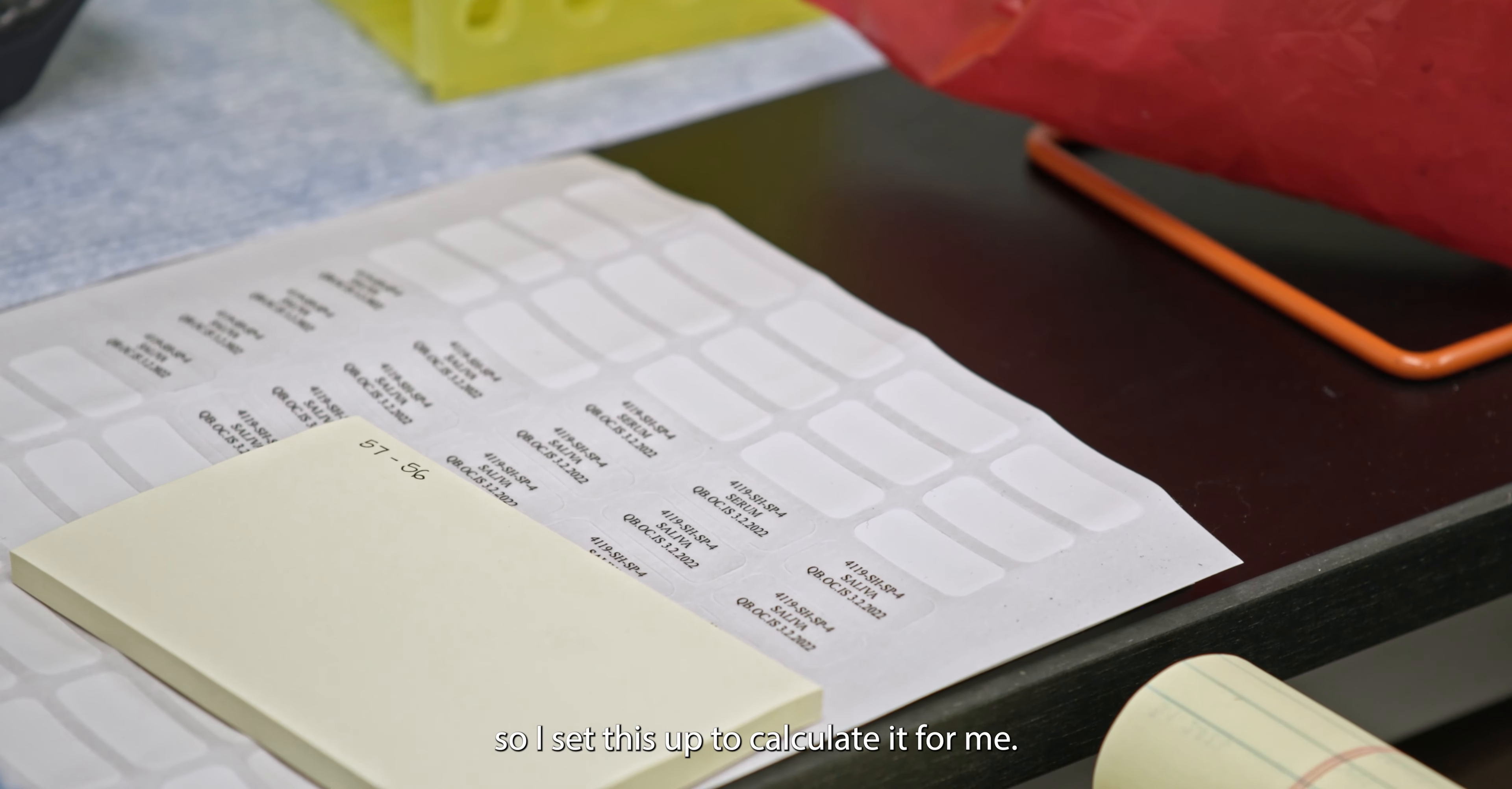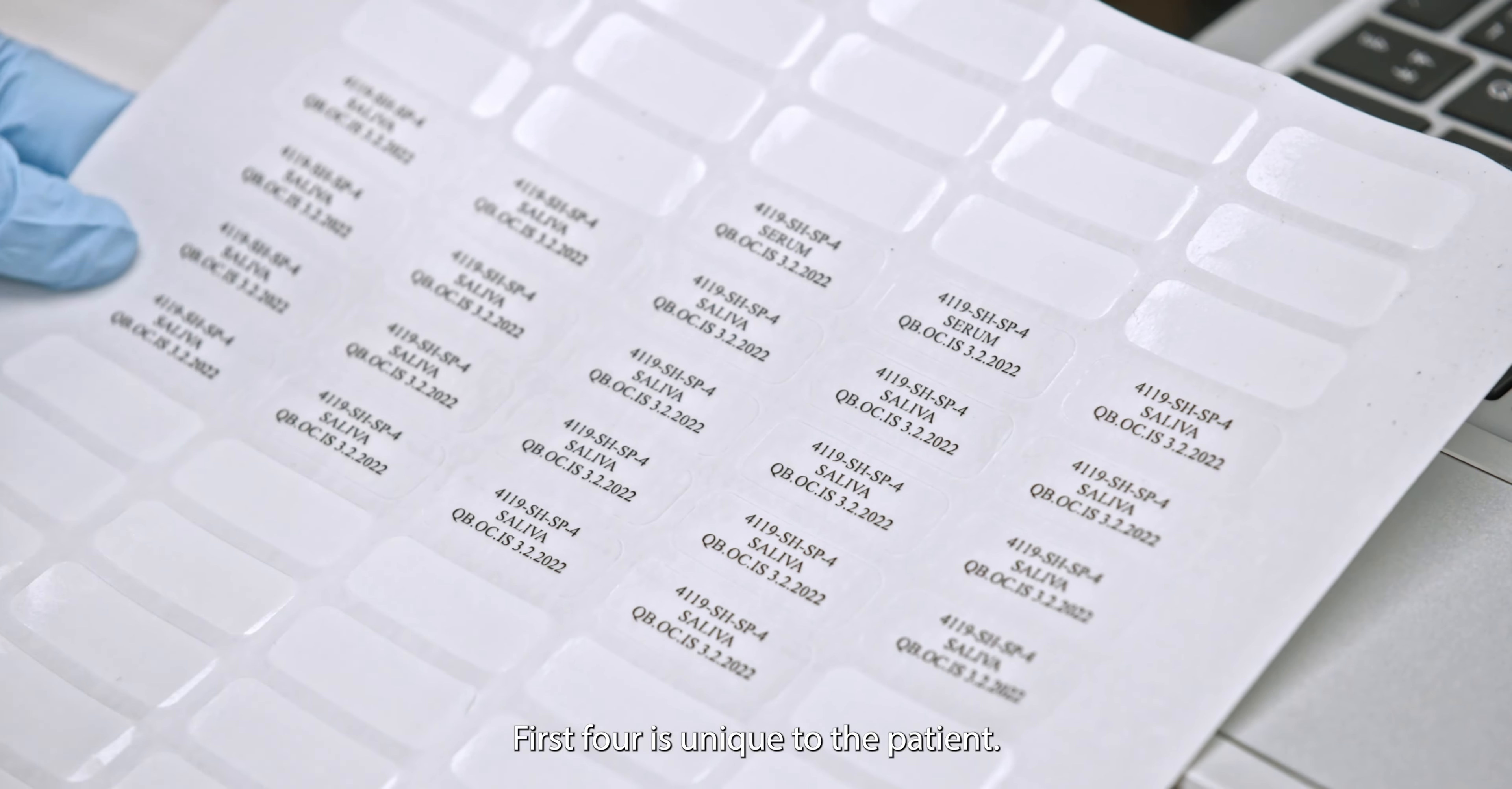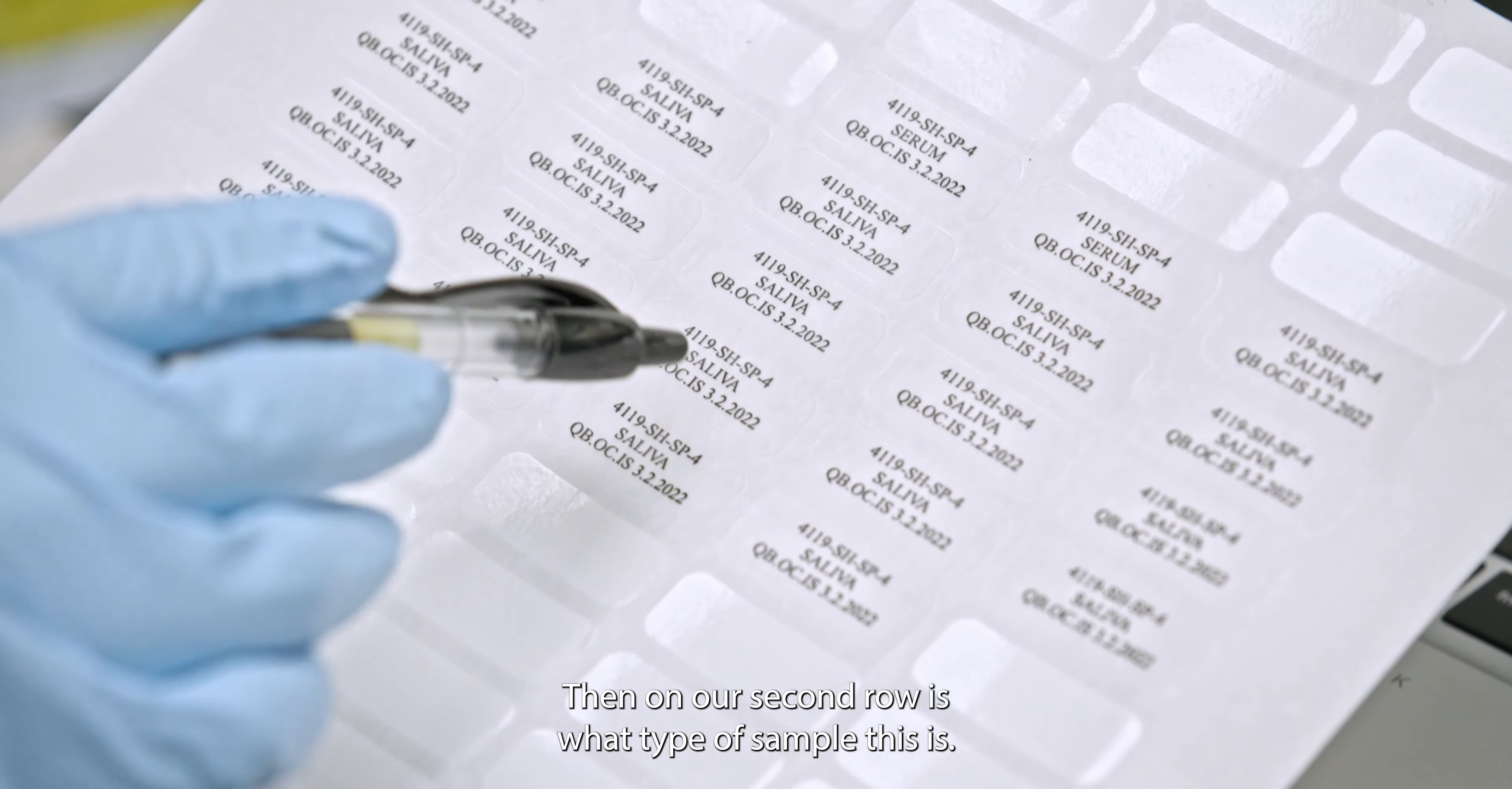So I've set this up to calculate it for me. This is our cell total, how many vials we need to freeze in, and the density it'll be frozen at. So we've got our sample IDs. The first four is unique to the patient. The letter code is going to be indicating what study they're in. This one is called Spitfire. And then the last number is how many times they've come in to visit.